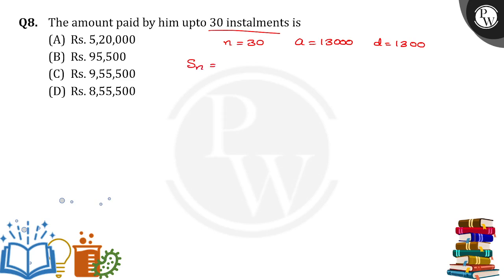So Sₙ value is equal to n by 2 into 2A plus n minus 1 into d. So substitute n is equal to 30: 30 by 2 into 2A, 2A means 2 into 13,000, plus 30 minus 1 into 1,300.